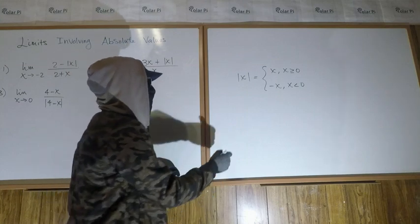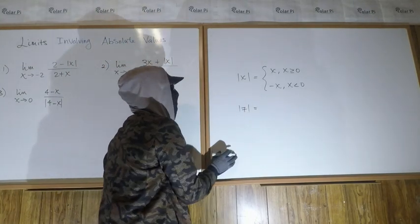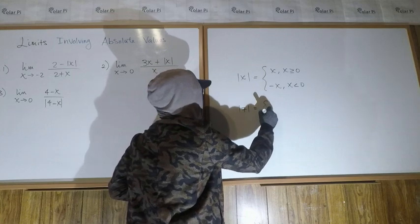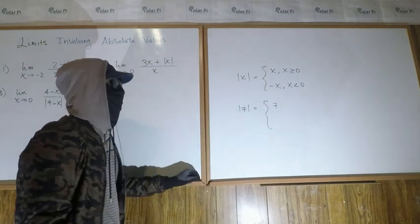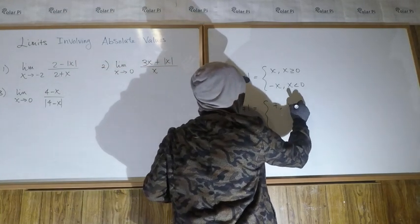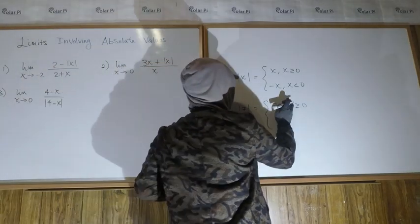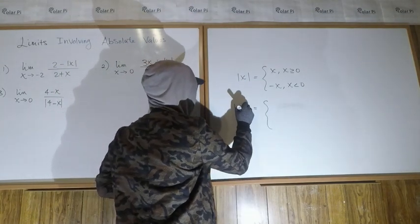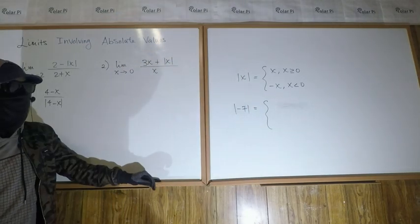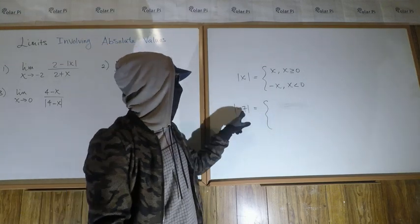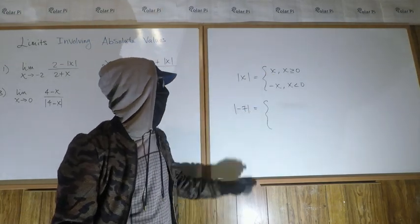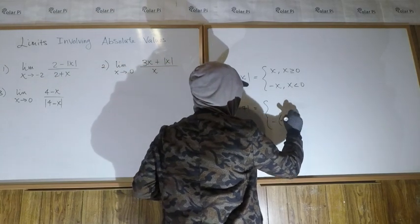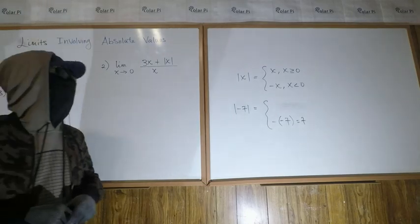We don't know ahead of time if x is positive or negative. For example, the absolute value of 7: since 7 is greater than or equal to zero, the definition says leave it alone — it's just 7. But if we had negative 7 inside the absolute value, negative 7 is less than zero, so we take the negative of x. The negative of negative 7 is positive 7. So this definition works.